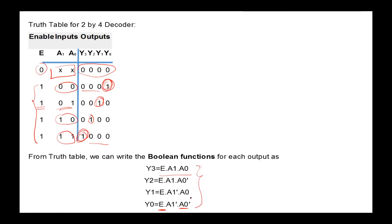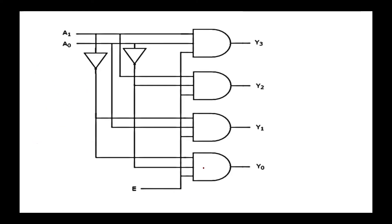Having these logic functions for the outputs, it is very easy to draw the logic diagram for the decoder. Here is the logic circuit for the 2-to-4 decoder. We have four AND gates, so the decoder is just an array of AND gates. We apply all states of the inputs to the AND gates to derive the outputs. The enable signal E is applied to all AND gates, so if E is zero, then all outputs are zeros.